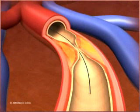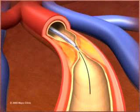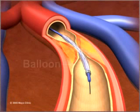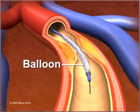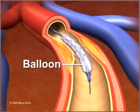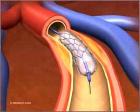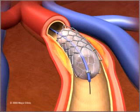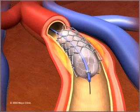A second, smaller catheter is then inserted over the wire and threaded to the same artery. When it reaches the narrowed area, a small balloon on its tip is inflated to reopen the artery and flatten the blockage into the artery wall, while at the same time stretching the artery open to increase blood flow to the heart.